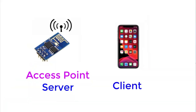When ESP8266 is set as an access point, it can generate Wi-Fi and different smart devices may be connected with this Wi-Fi. Those smart devices can communicate and exchange data with this ESP. The most important feature here is that there is no need to use any data pack from any internet service provider to communicate locally with other devices.